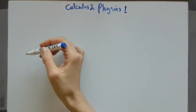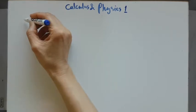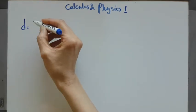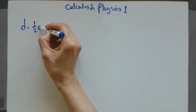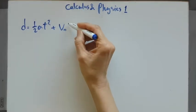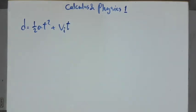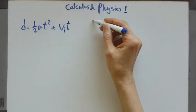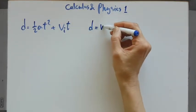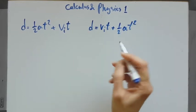Let's look at this formula. You know this formula — displacement equals V initial (in some books they say V₀, same thing). And in some books it's written a different way, which is exactly the same thing.